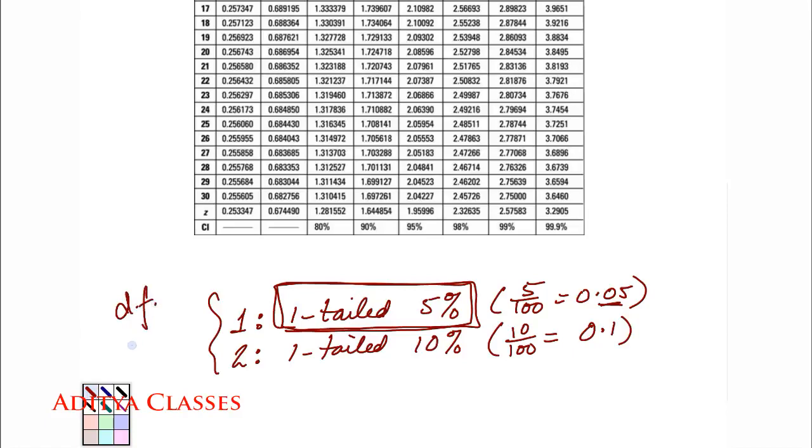If my question is such that I need to check 1-tailed 5%, what is 5%? It is 0.05. This is your 1-tailed 5% value. And suppose we are given that in both cases, we are given that n is equal to 20. If n is 20, so how many degrees of freedom do I have? 19. Because what is degrees of freedom, it is n minus 1.